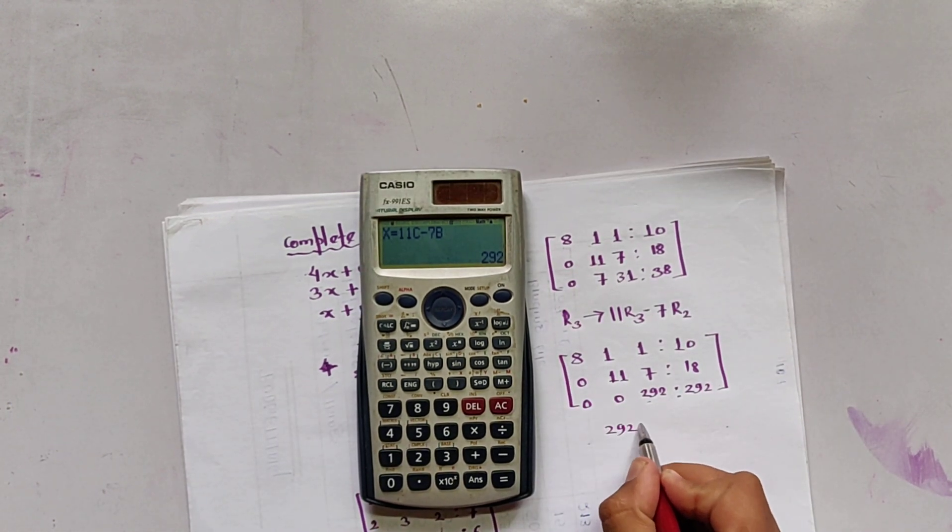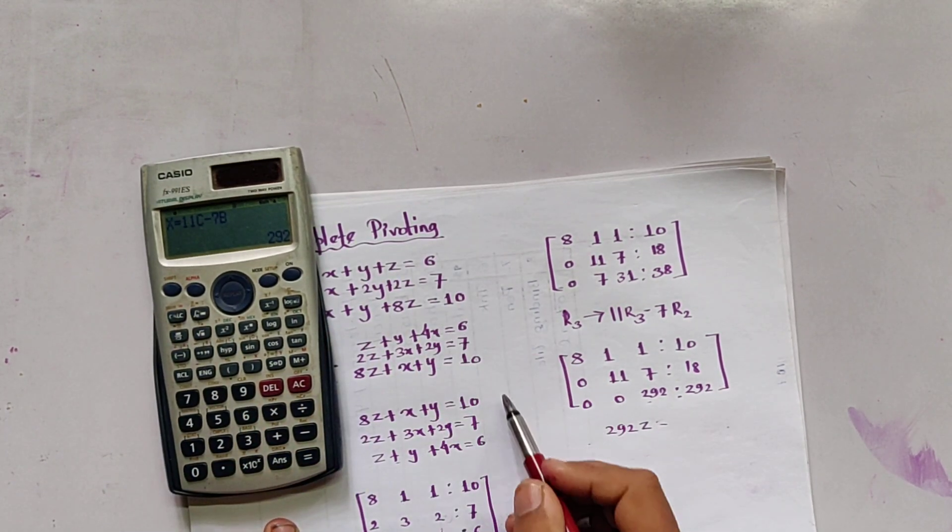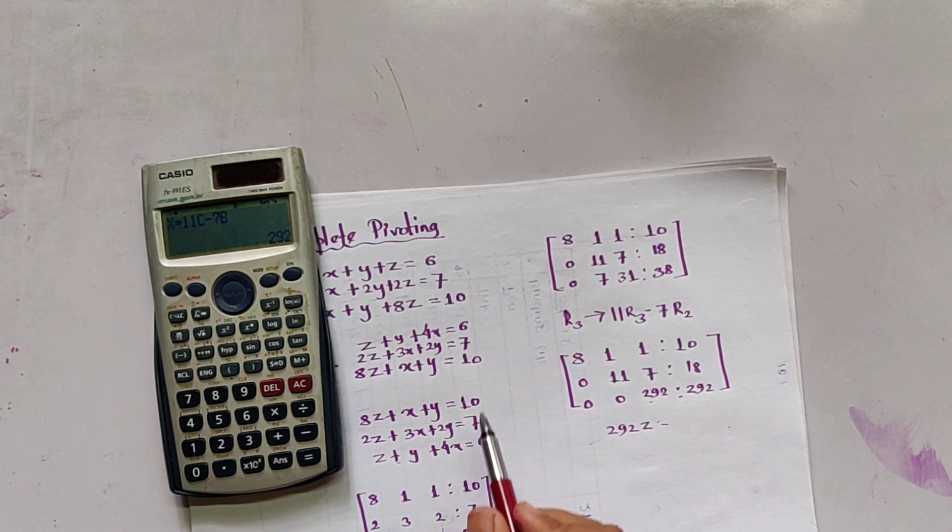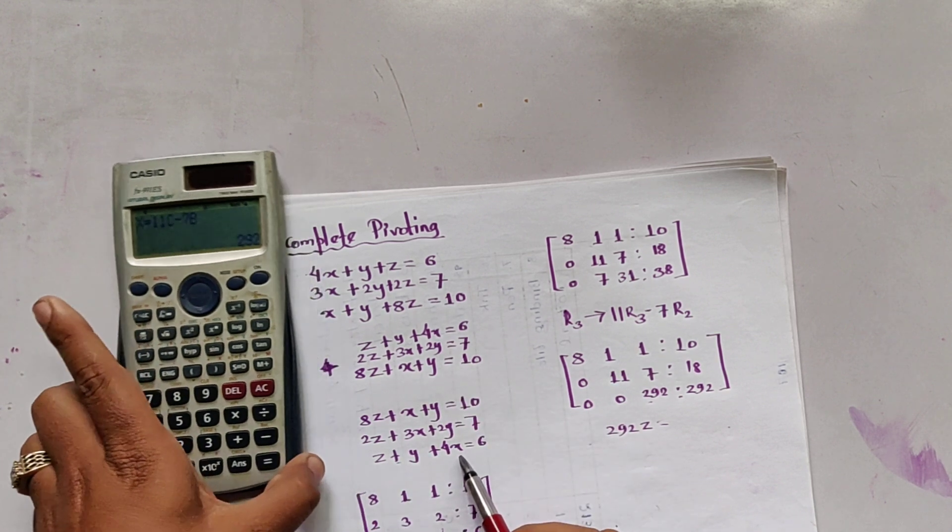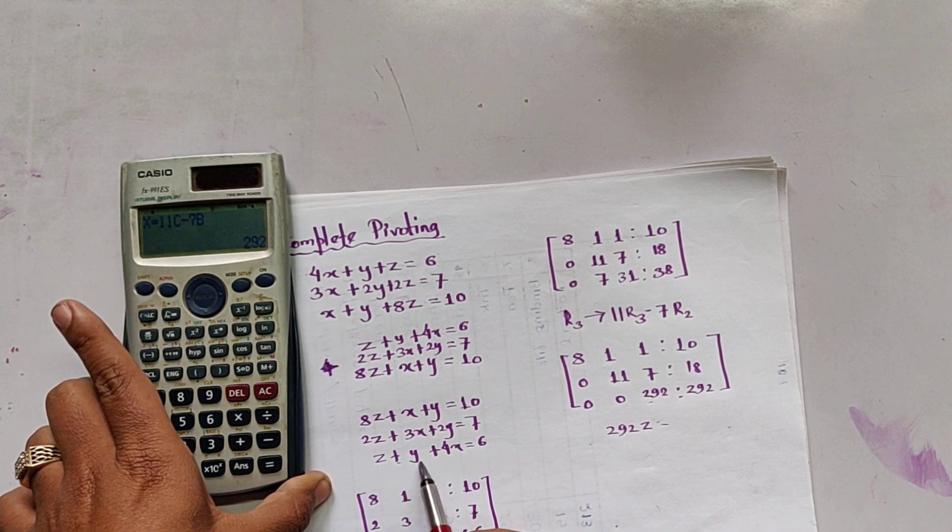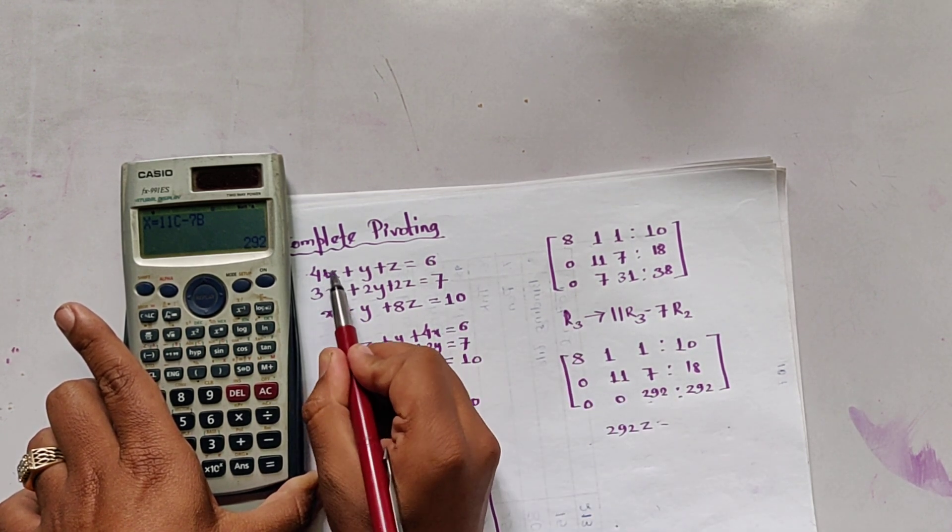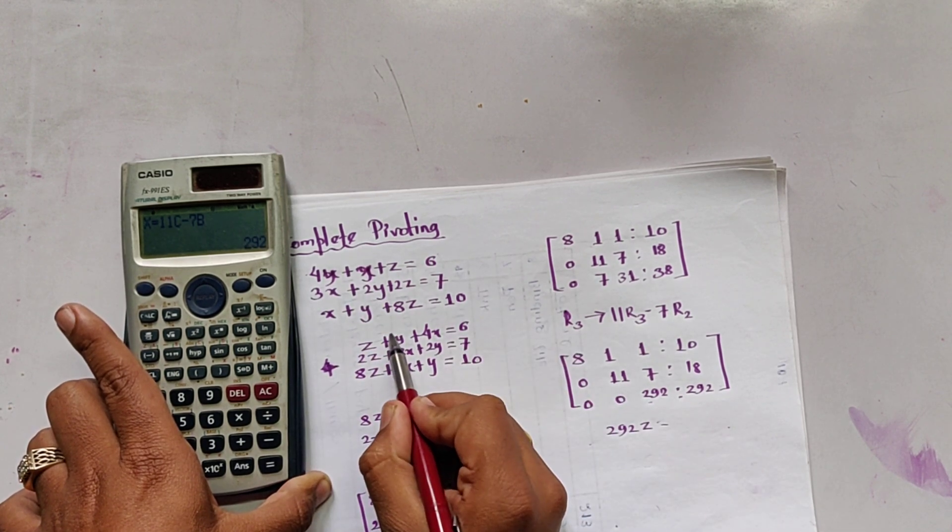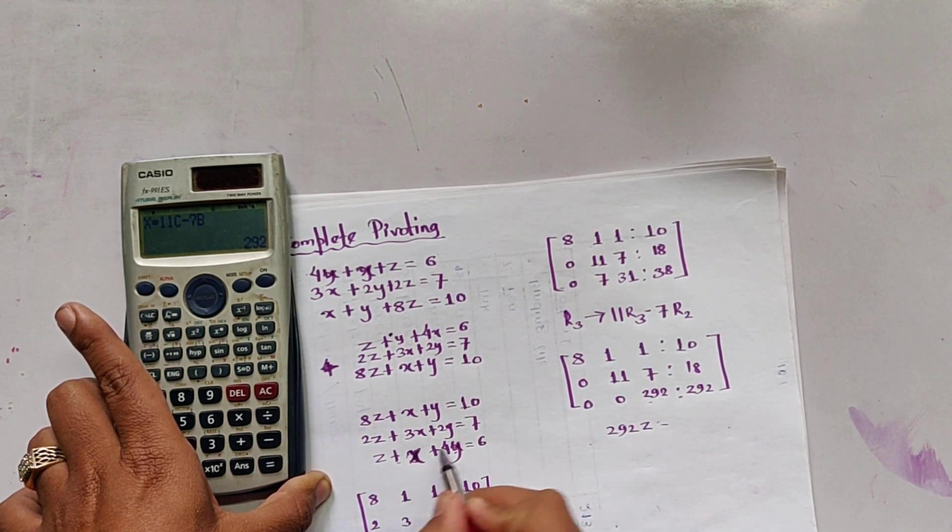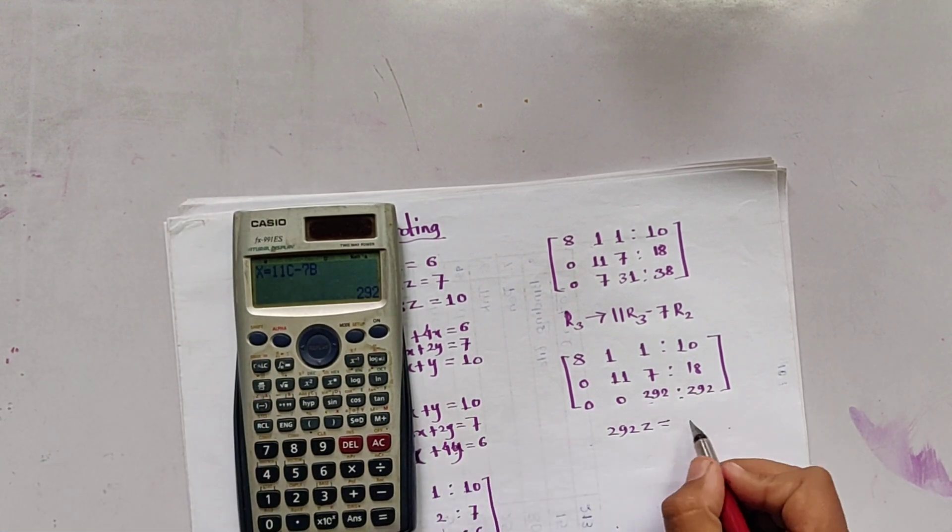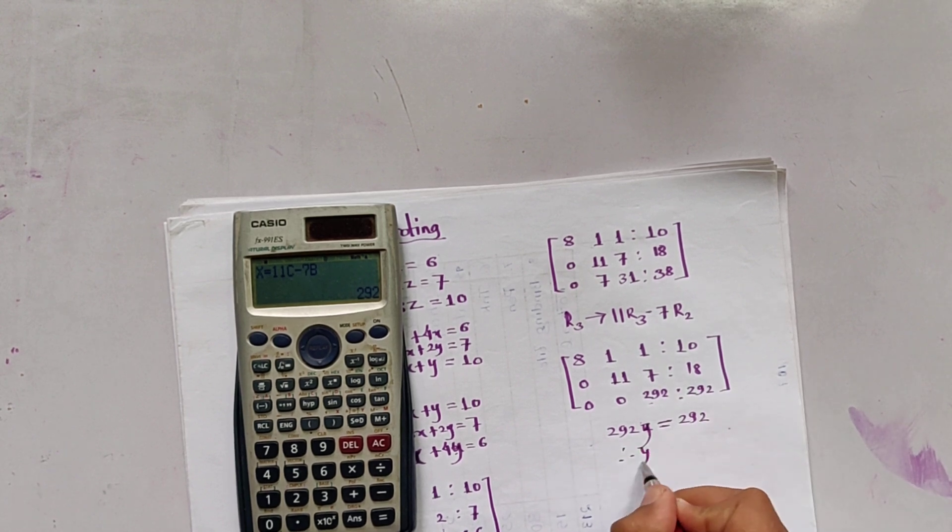So by backward substitution, 292. The third part is not Z. It is 4X. Here is 4X. No, it is not 4X. Sorry, I have interchanged this part. This is a mistake. Let us correct the question. It is 4Y. It is X. 4Y equals 6. So the last part is Y. 4Y equals 292. Therefore, Y equals 1.